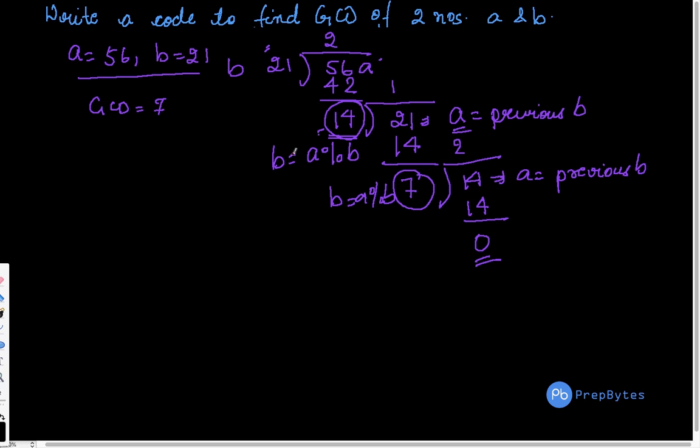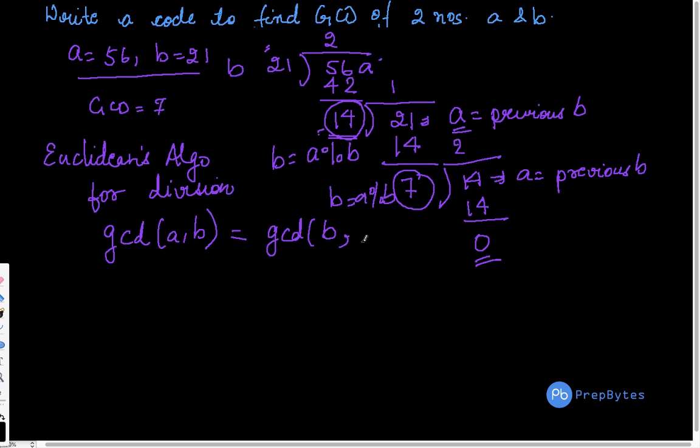So following this approach, this is known as Euclidean's algorithm of division. So if we try and write it in a formula, it says GCD(A, B) is equivalent to GCD(B, A mod B).